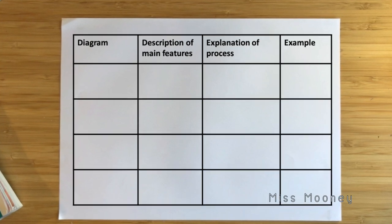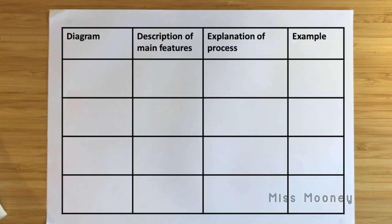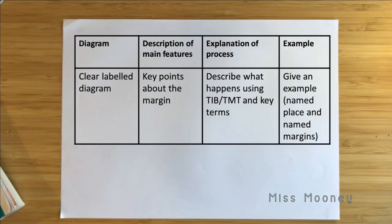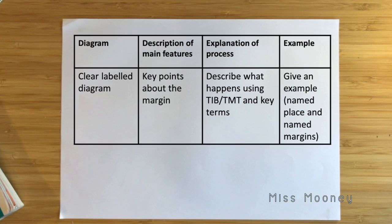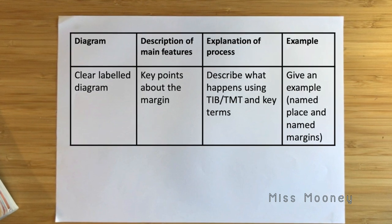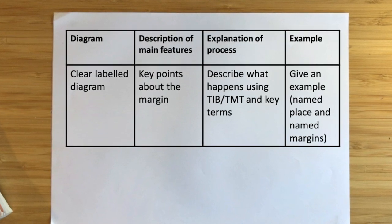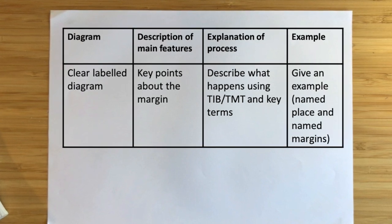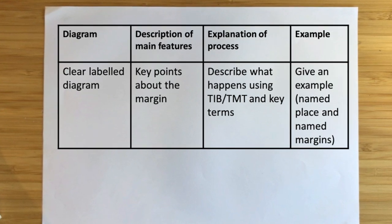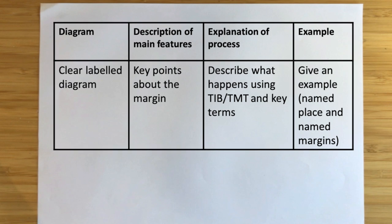Now you've watched the video, try to complete this table yourself and see what information you've retained. Watch over the video again and complete the table with any information you couldn't recall. Remember: you need to include a clearly labelled diagram, a description of the main features, and an explanation of the processes occurring — using phrases like 'this is because' and 'this means that' — along with key terms highlighted. Finally, make sure you include key examples of named places and named margins for each plate margin.